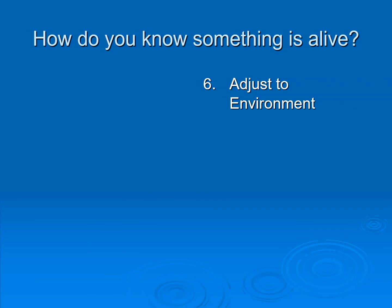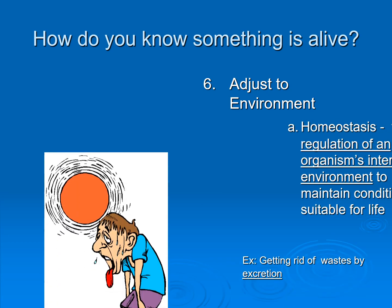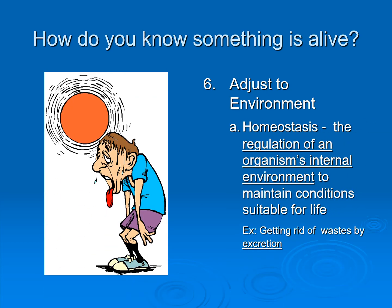We also have to be able to adjust to our environment — maintaining homeostasis, the regulation of our internal environment so that we can stay healthy. We get rid of waste by excretion, such as sweating: when you're overly hot, your body releases a salt solution onto your skin that evaporates and helps cool the body. Other forms of excretion are urination and bowel movements. We have to excrete those ways to maintain homeostasis, and our kidneys play a huge role in homeostasis.